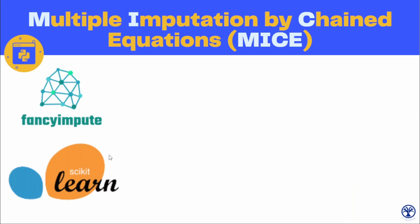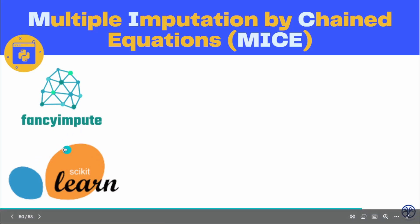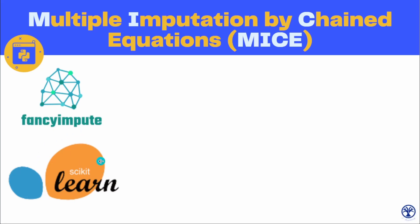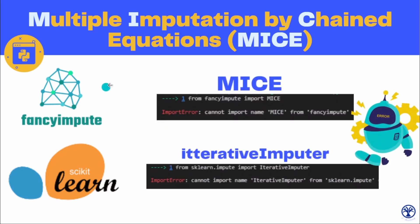If you want to use MICE in Python, there are two main libraries you'll see in action: FancyImpute and Scikit-learn. Scikit-learn is relatively more famous and is a general-purpose library that is very diverse. FancyImpute is relatively newer to the scene and its main idea is to focus on just imputation techniques. In both of these libraries, whenever you want to impute using the MICE technique, you'll see some sort of error — because when you write 'from FancyImpute import MICE', you'll see an import error.